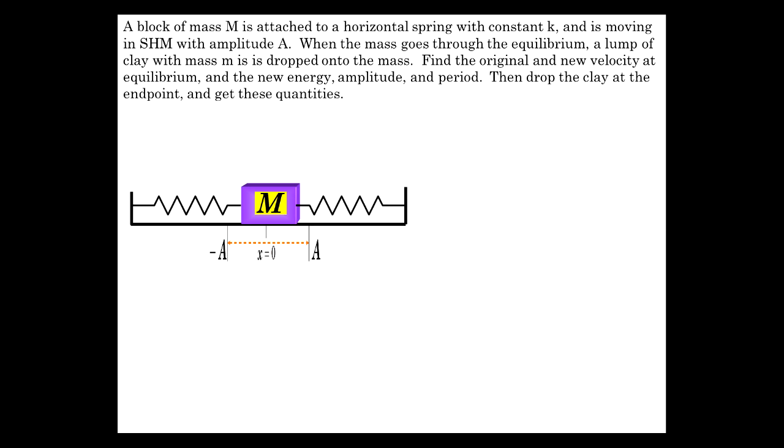Now, let's let a spring mass system oscillate between plus and minus A. And what we're going to do is drop a lump of clay onto it right at the equilibrium position. So the thing is going this way, and we drop this lump of clay on it when it's moving at its max speed. And basically what we're going to do is look to see the effect of that on the various physical quantities, the energy, the amplitude, the period, the velocity, and then do it again when the mass is all the way to one end.